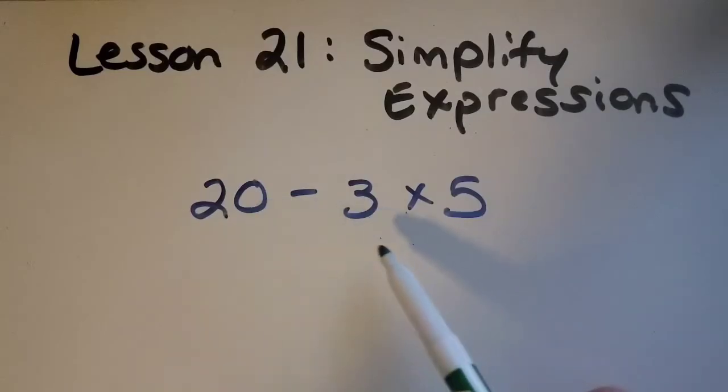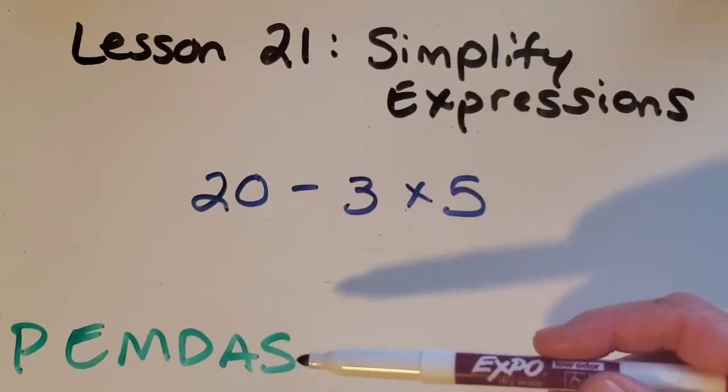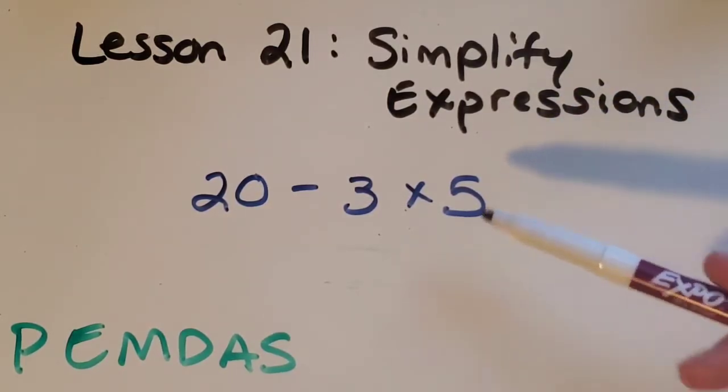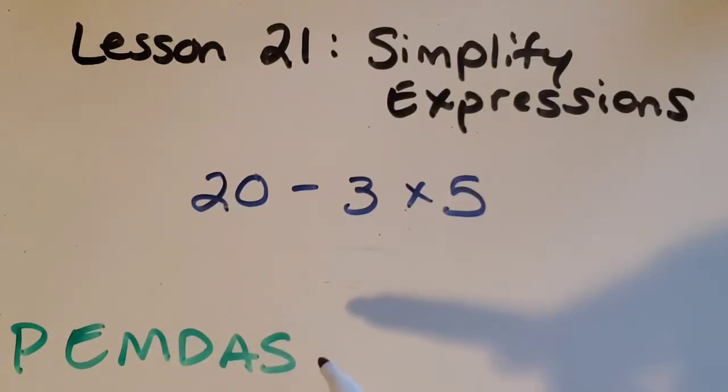The thing that's important with expressions is that we learn the correct order of operations. If one person starts over here with the subtraction and then another person says no we're supposed to multiply first, then you would get two different answers. So we are going to learn about the order of operations that was decided upon by mathematicians a long time ago to make sure that we all do expressions in the same order and we'll all get the same answer. This is just an easy way to remember the steps. If you'll say PEMDAS with me, PEMDAS, it tells you the steps in the right order.